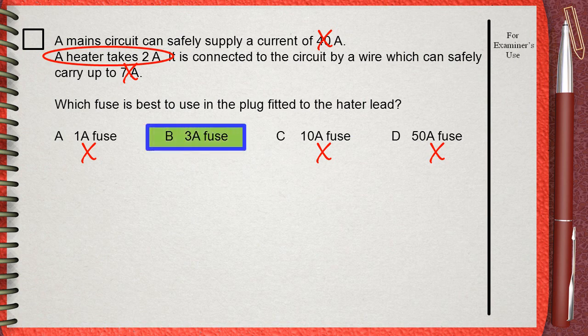So the best choice is the 3 Ampere fuse. Its value is close to and just above the 2 Amperes current needed by the heater.